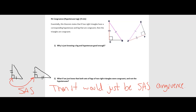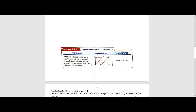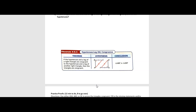We only use HL when talking about the hypotenuse of one triangle and a leg being congruent to a hypotenuse and a leg from another triangle. If the hypotenuse and a leg of one right triangle are congruent to a hypotenuse and a leg of another right triangle, then the triangles are congruent. Let's apply this to a proof.